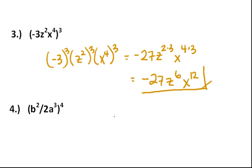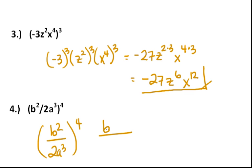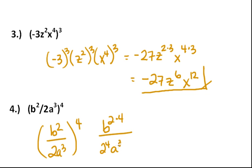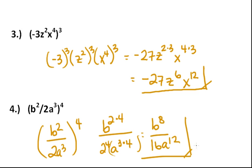Number four: we have b squared over two a cubed, all raised to the fourth. Just split up what's on top and bottom. That would be b to the two times four, over two to the fourth times a to the three to the fourth — so a to the three times four. When you simplify further, you get b to the eighth over sixteen a to the twelfth as the final answer.